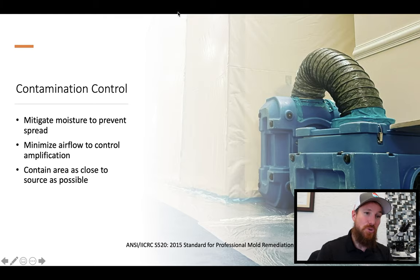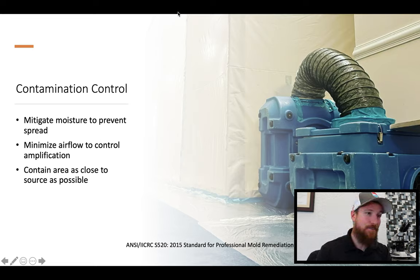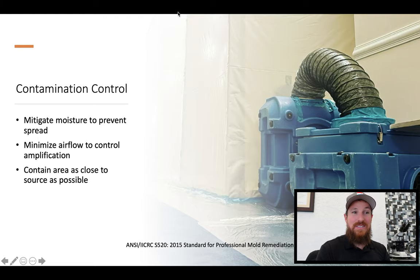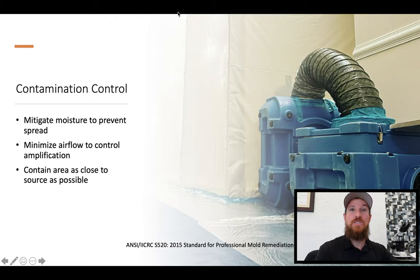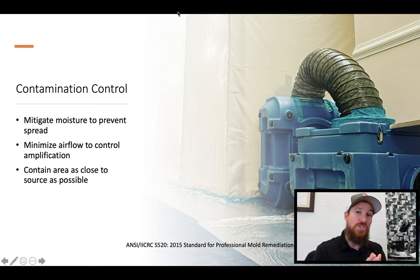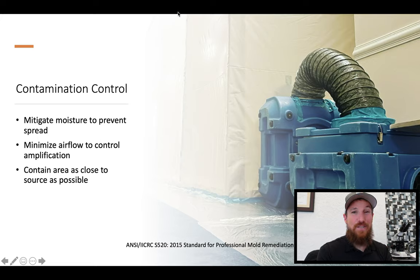Moving along to contamination control — and as you can see, we've got some air filtration devices in the background with one of our wood frame pressure-fit containment barriers. We want to mitigate the moisture to prevent the spread. Normally when we talk about mitigating moisture, this falls under the water mitigation or drying side of things. We may show up to provide an estimate for mold remediation services and find that there are materials still wet that can undergo mitigation — applying heat to surfaces, controlling relative humidity — which is ultimately going to prevent the spread of potential mold growth and other microorganisms.